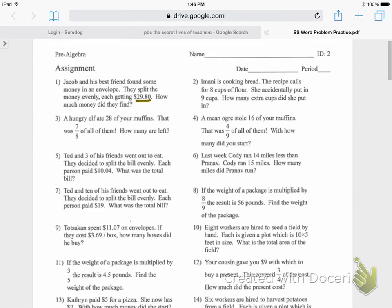Jacob and his best friend found some money in an envelope. They split the money evenly, each getting $29.80. How much money did they find? Well, how many people are there? There's Jacob and there's his best friend. So it sounds like they're splitting money between two people.